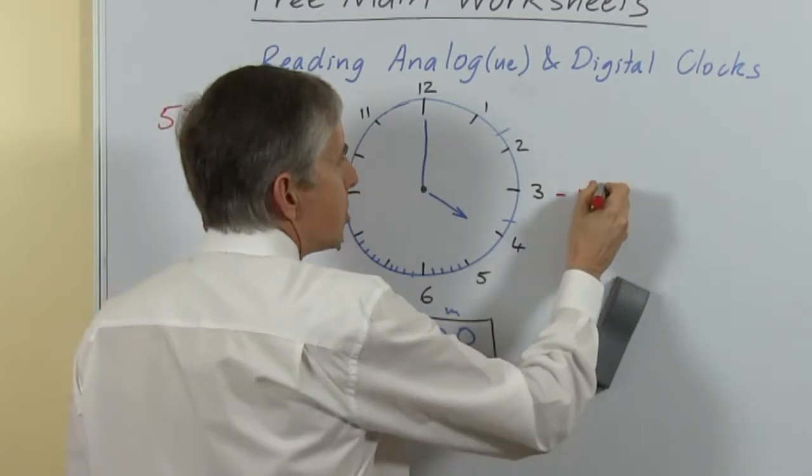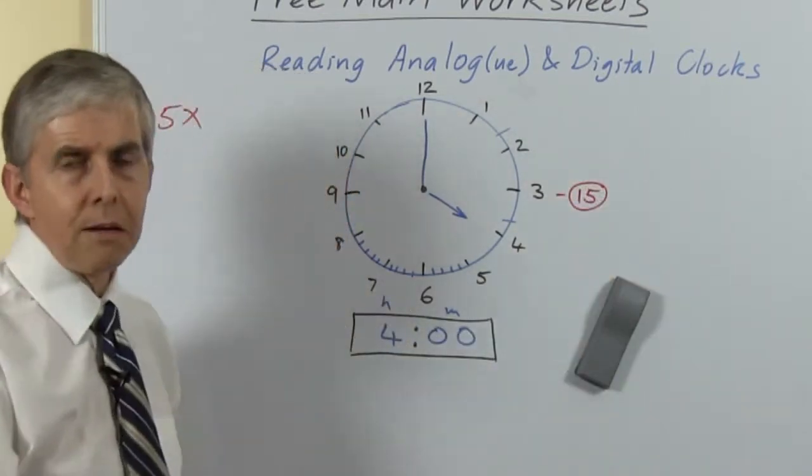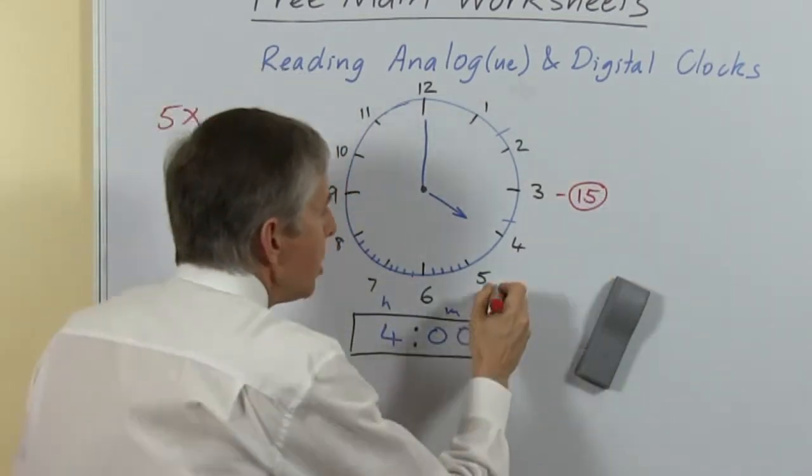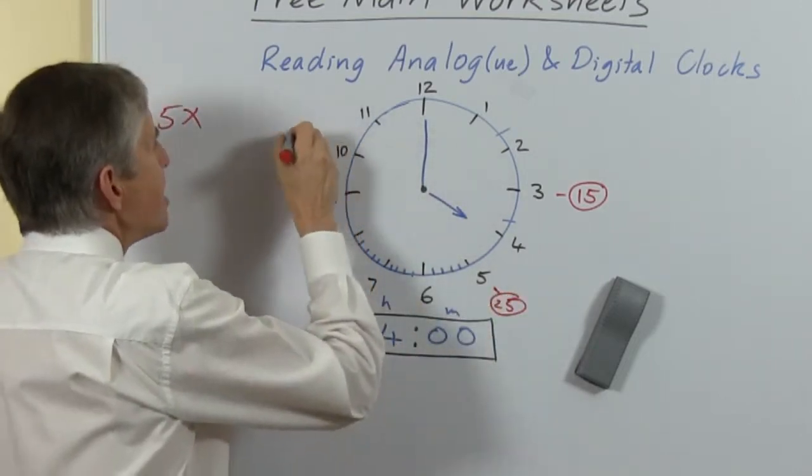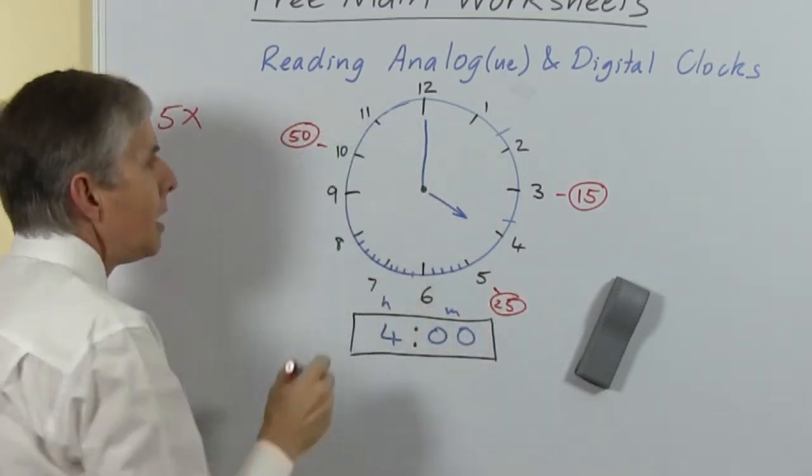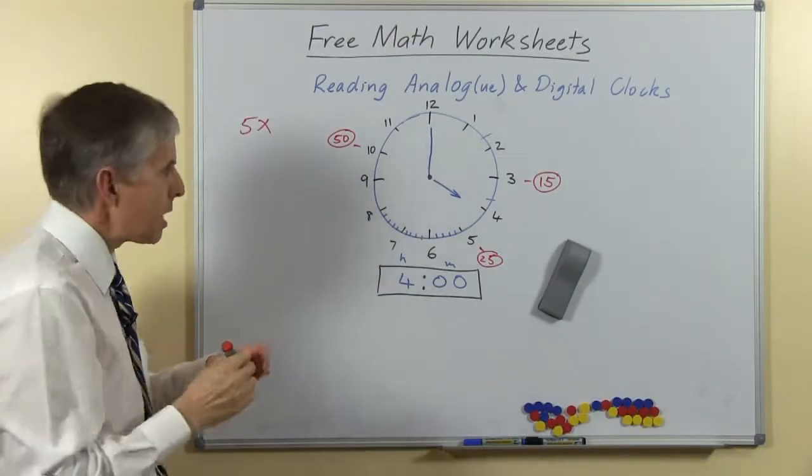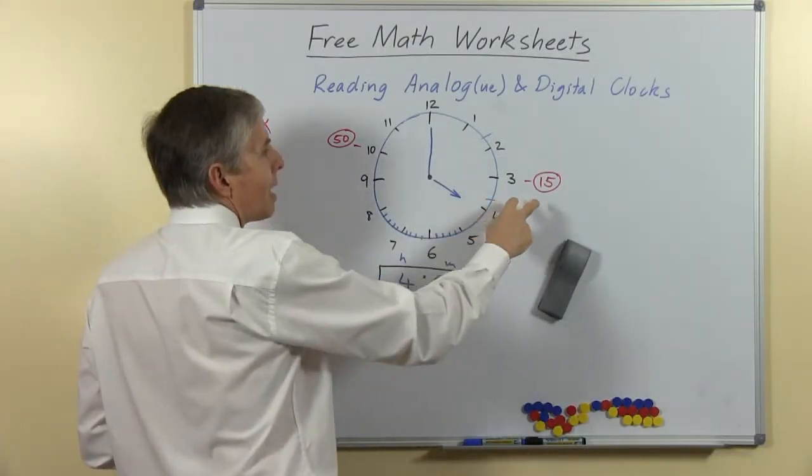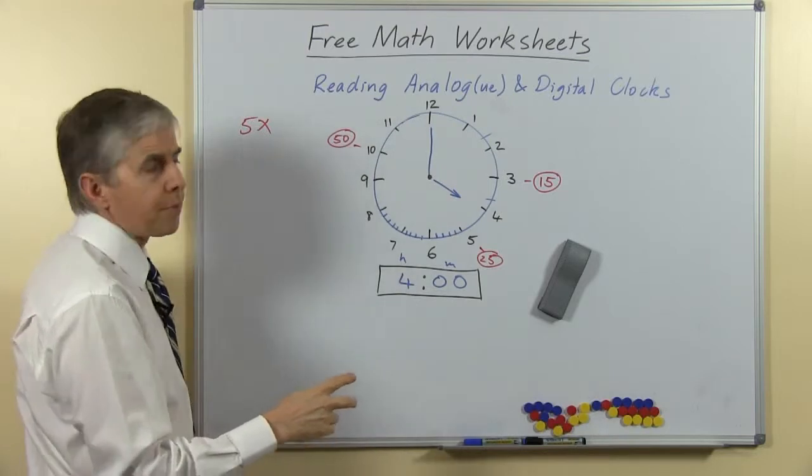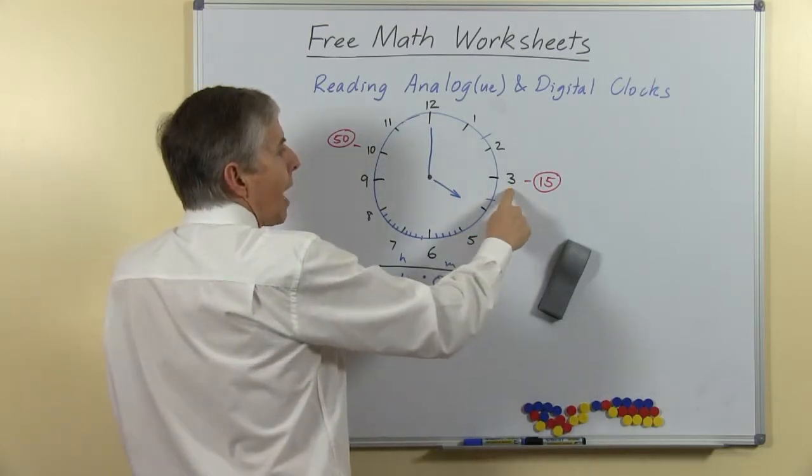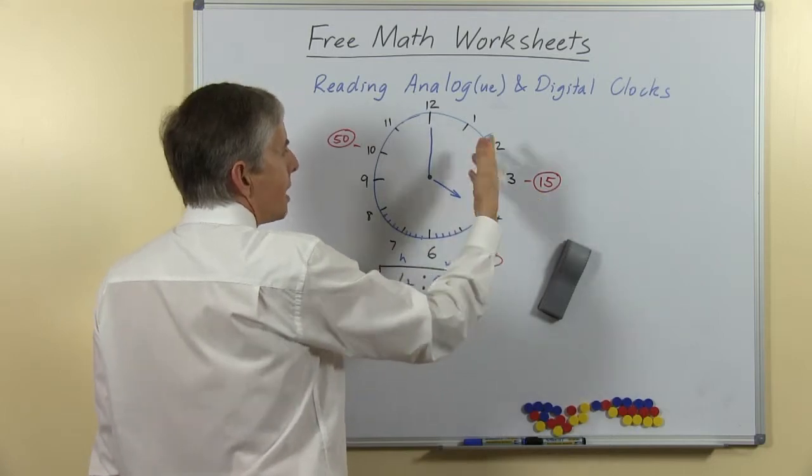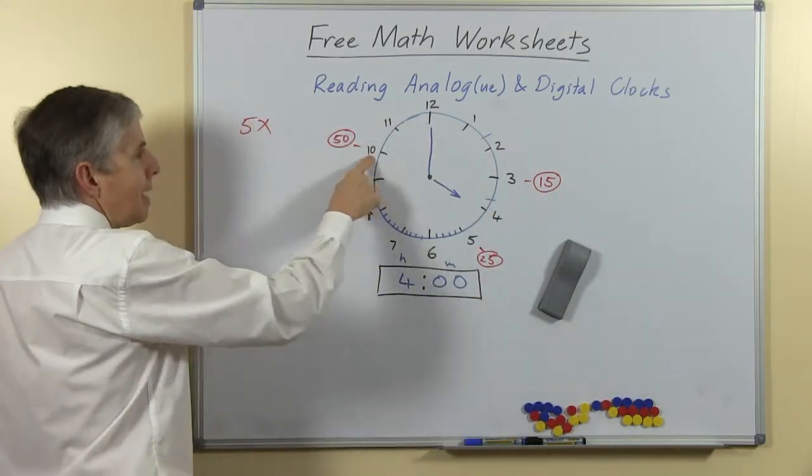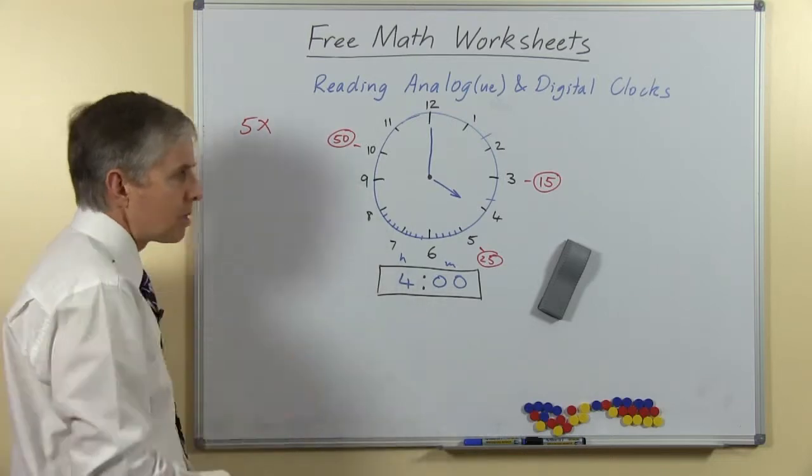When the minute hand points at the 3 we know that's 15 minutes past the hour, when it points at the 5 as another example it's 25, at the 10 it's 50. Now each of those numbers and all the others is in the 5 times table and it's equal to the number of hours multiplied by 5. So at the 3, 3 fives of 15 that is 15 minutes, at the 10, 10 times 5 is 50 and that's the number of minutes.